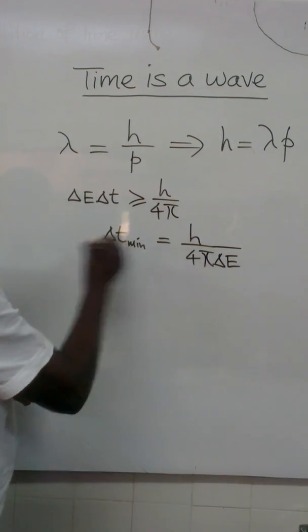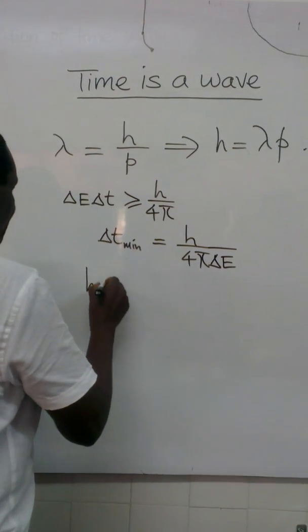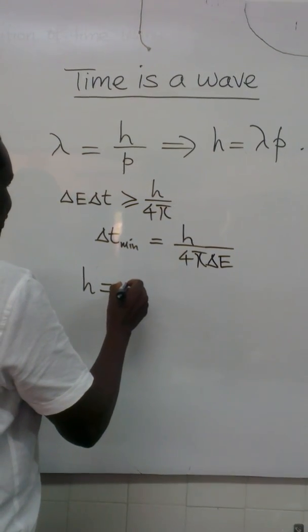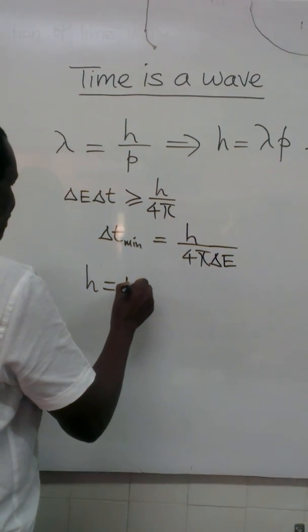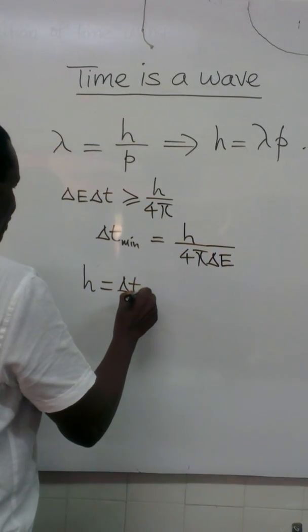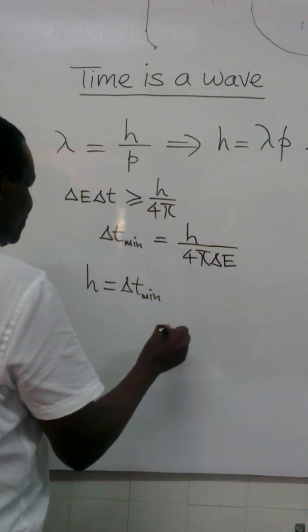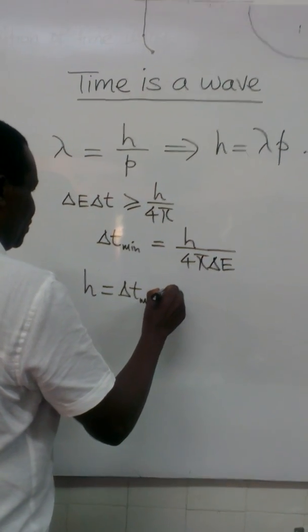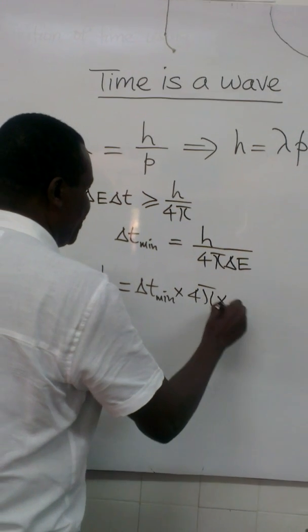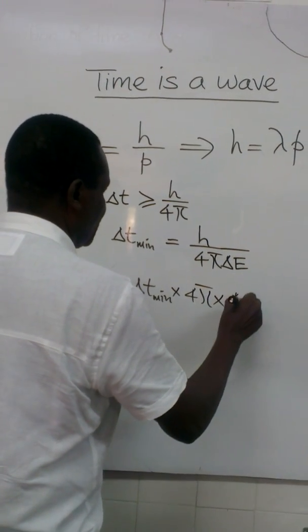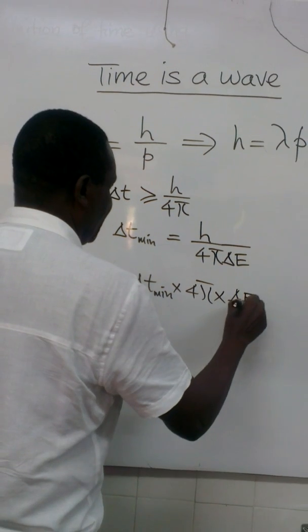This also implies that h, Planck's constant, is equal to the minimum uncertainty in time, times 4pi, times the uncertainty in energy.